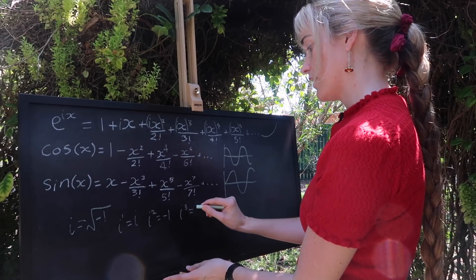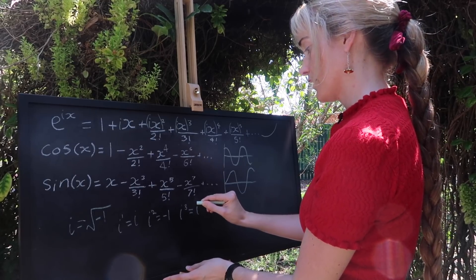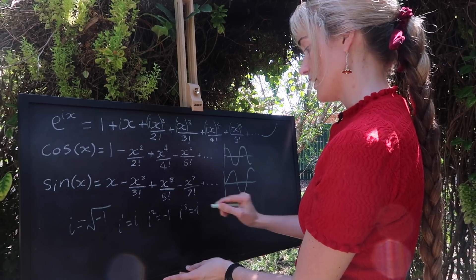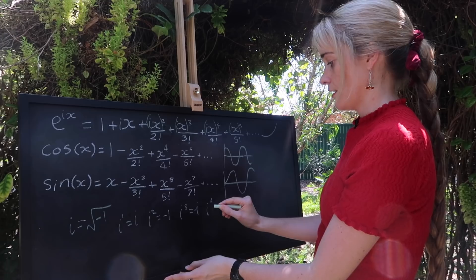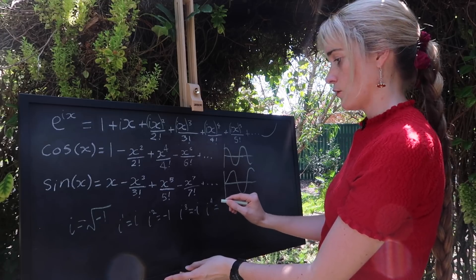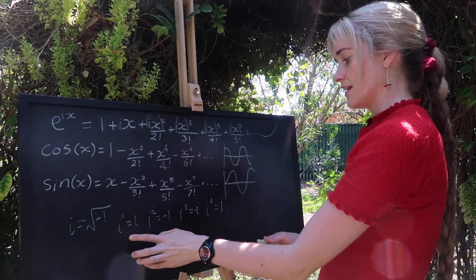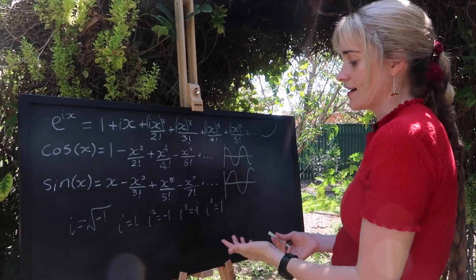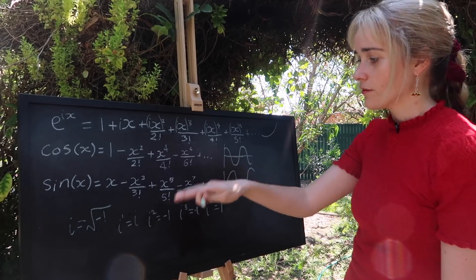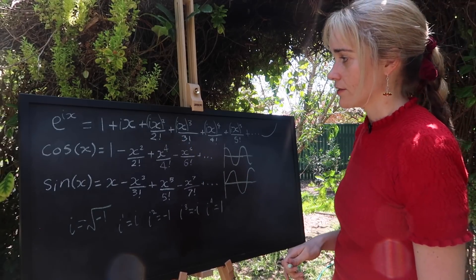That's from our definition here. And if we were to do i cubed, that would be minus i, i to the four would be one. And in fact, this series repeats itself between i minus one minus i and one. And we can use that to rewrite some of these terms.